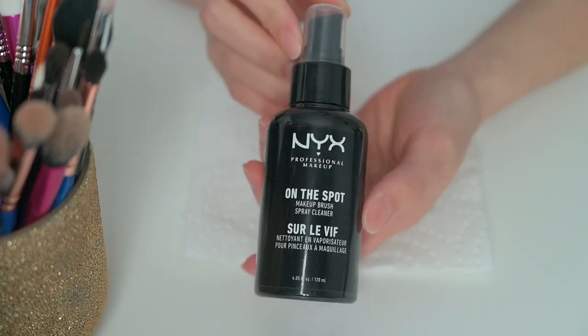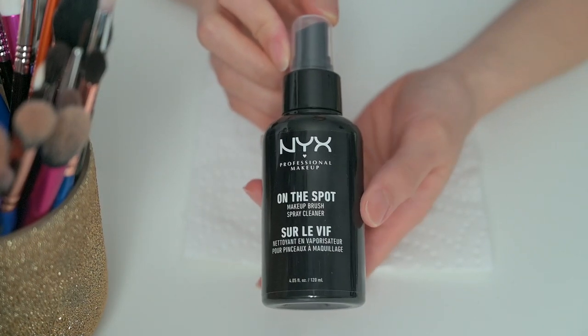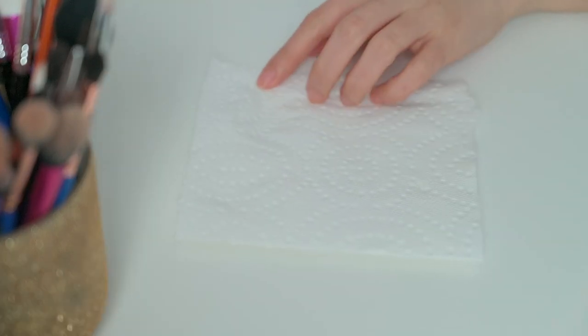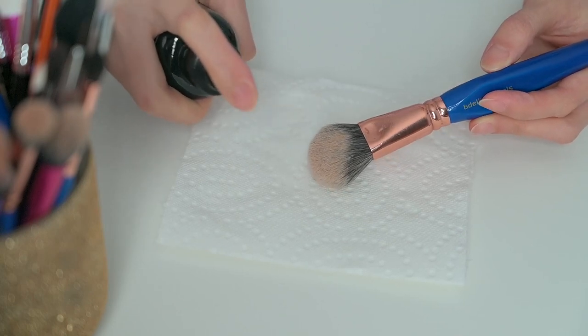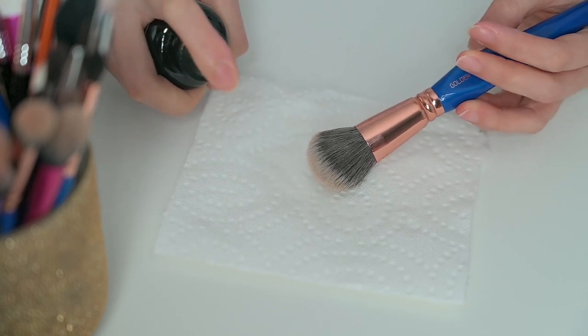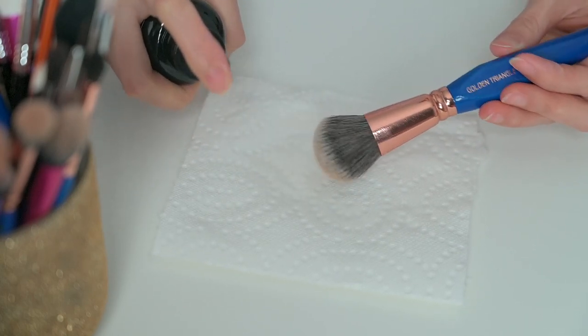I have a paper towel here and I put the brush close to the paper towel, then spray the cleaner while turning the brush around to distribute the solution evenly on the bristles. Then I start swirling the brush around to clean it until there's no color coming out.